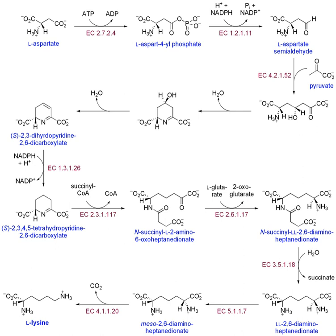The three stages of cholesterol synthesis are: (1) the synthesis of isopentanyl pyrophosphate, the building block of cholesterol; (2) the formation of squalene via the condensation of six molecules of isopentanyl phosphate; and (3) the conversion of squalene into cholesterol via several enzymatic reactions.